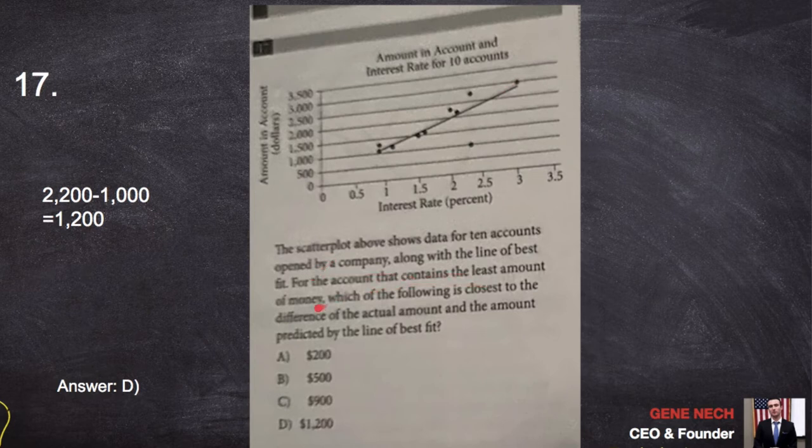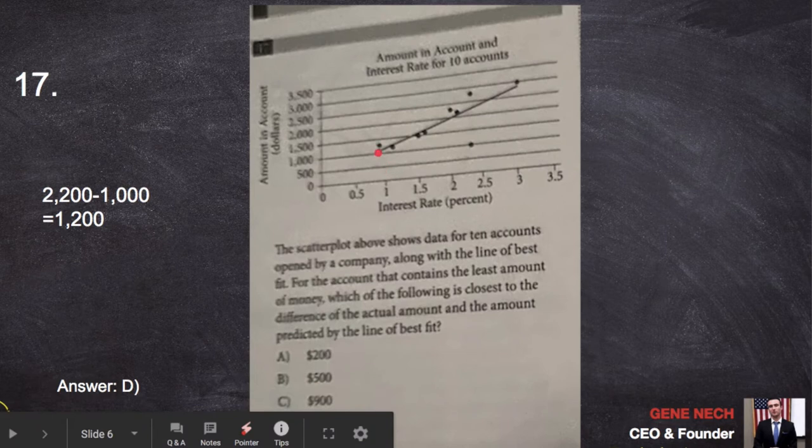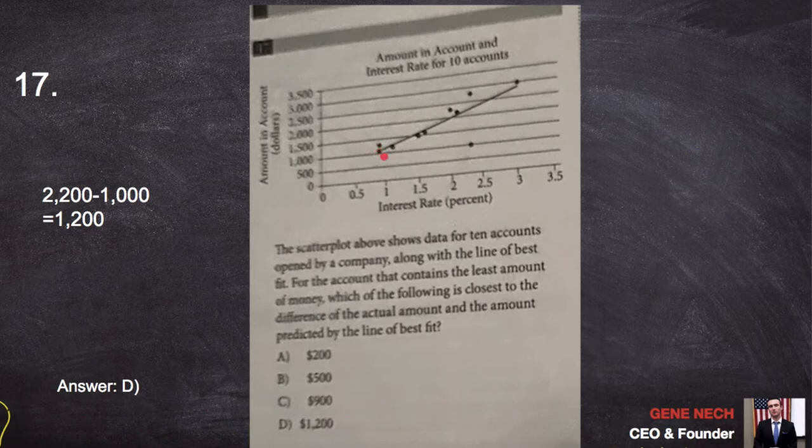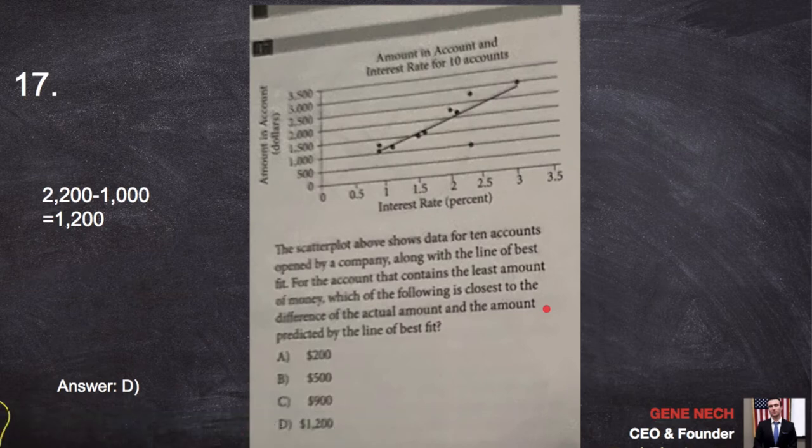For the account that contains the least amount of money, that's this one and this one. These two accounts have a thousand bucks. Which of the following is the closest to the difference of the actual amount and the amount predicted by the line? So it's a trick to go here because you can't compare this account to that account because these are two actual accounts. They're saying actual account minus the prediction. Prediction minus the account. Look, there it is. 2,200 minus 1,000 gives us answer D. Classic SAT question. You have to read very carefully before you do any math.